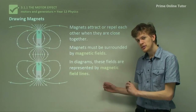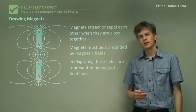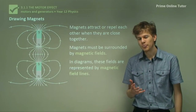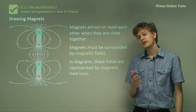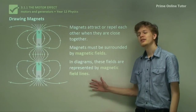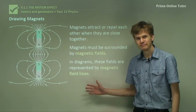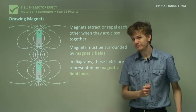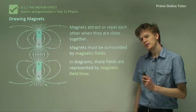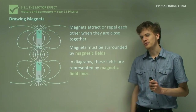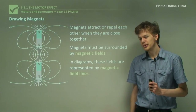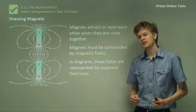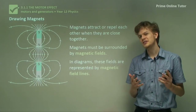So in diagrams, instead of using something like gravitational field lines, we can represent magnetic fields by magnetic field lines. We can see a few in the diagram over here, but we're going to need to lay down some conventions.